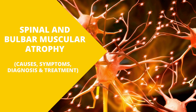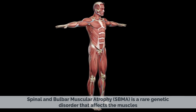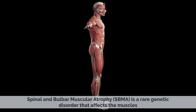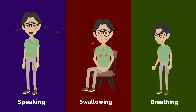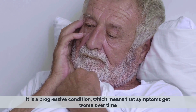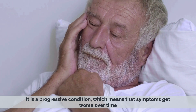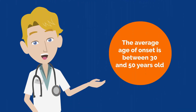Today's video topic is Spinal and Bulbar Muscular Atrophy, or SBMA — a rare genetic disorder that affects the muscles used for speaking, swallowing, and breathing. It is also known as Kennedy's Disease, named after the physician who first described it in 1968. It is a progressive condition, meaning that the symptoms get worse over time, with the average age of onset between 30 and 50 years old.